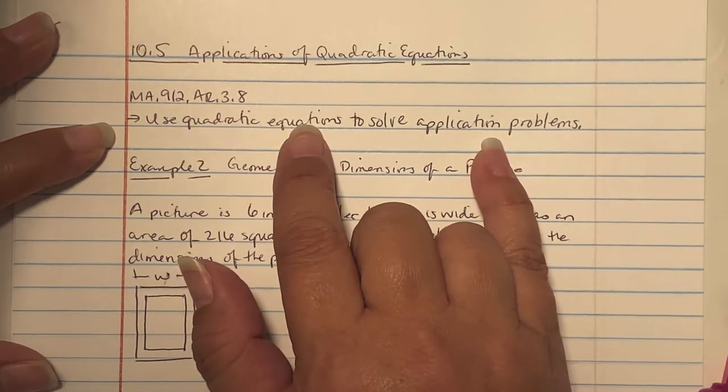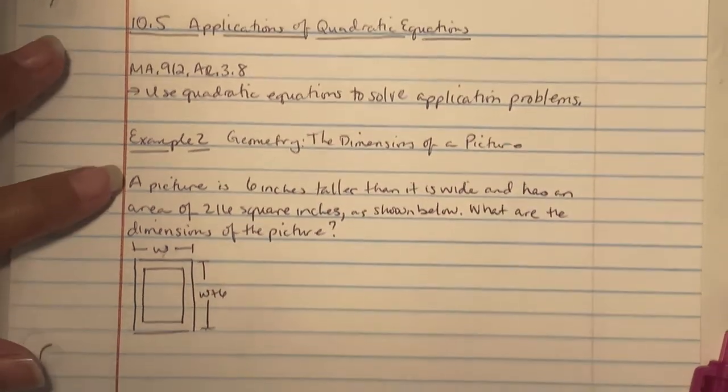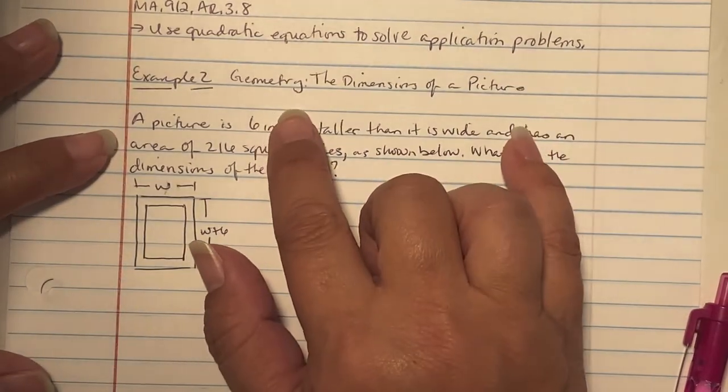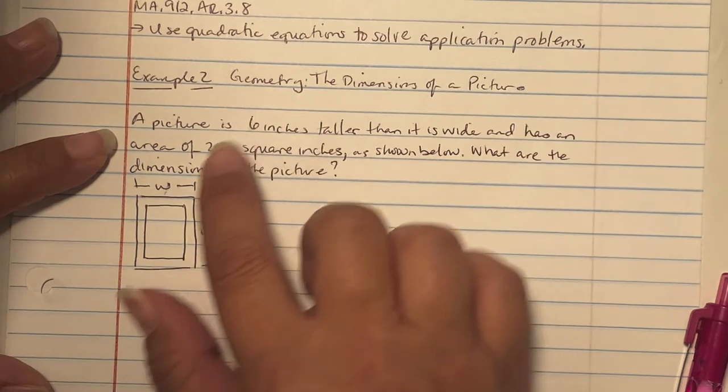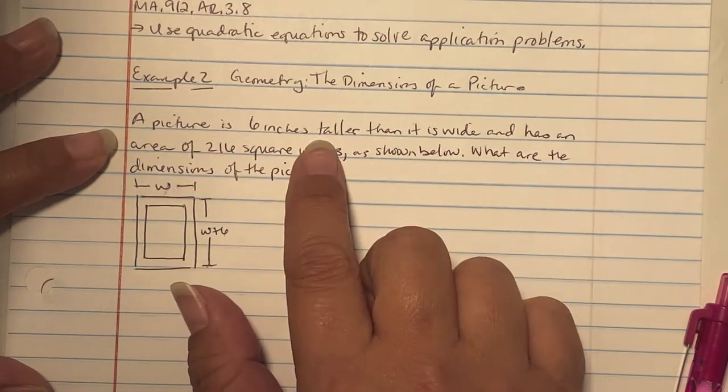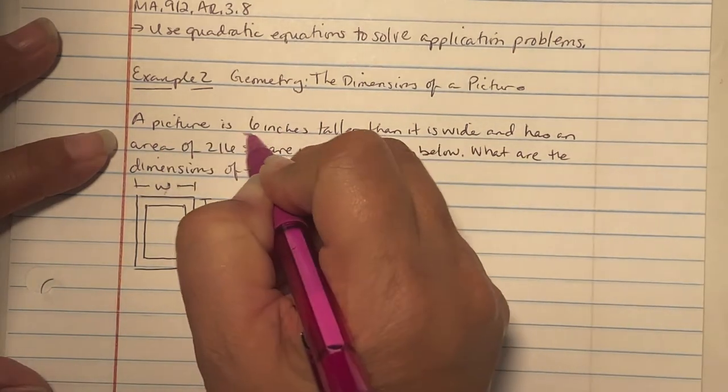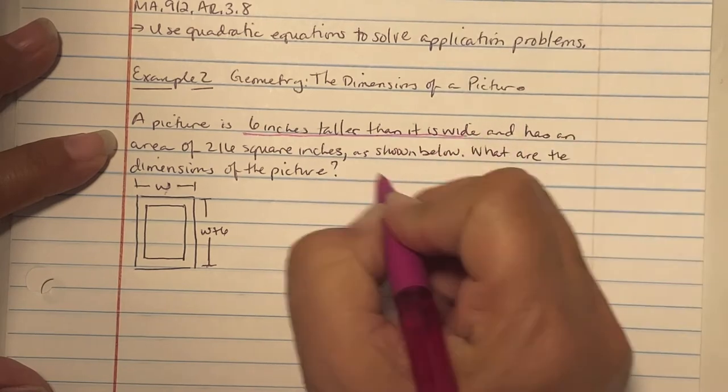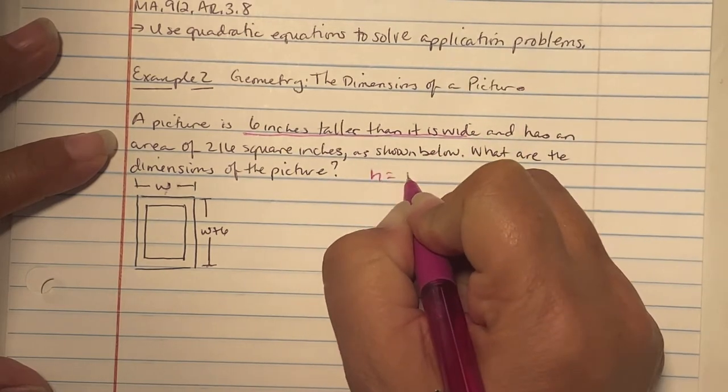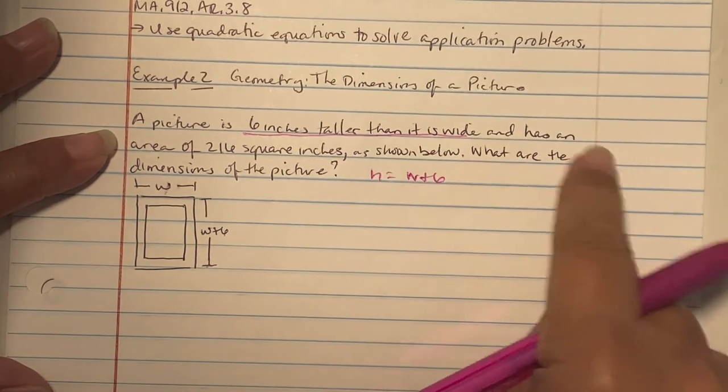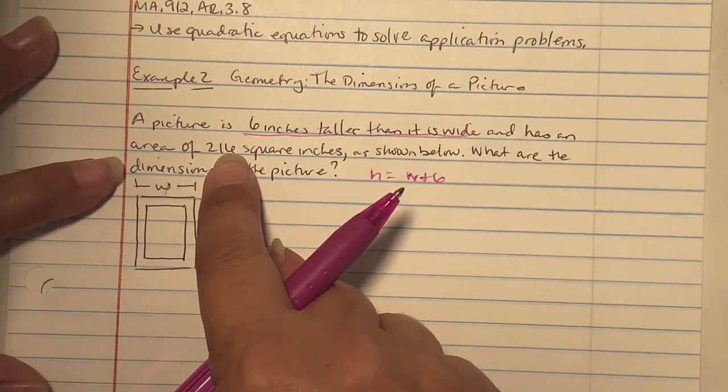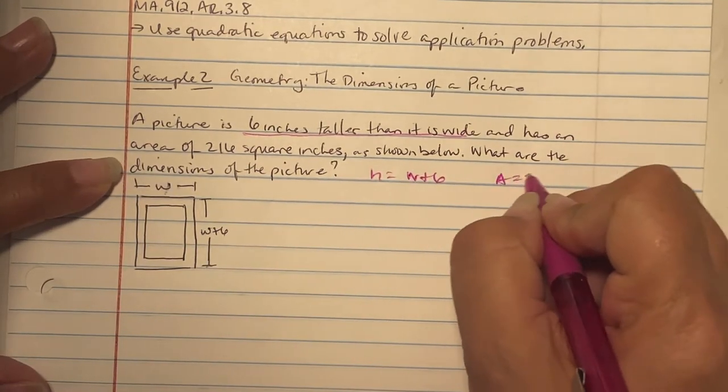Example 2 starts with a geometry problem, the dimensions of a picture. A picture is six inches taller than it is wide, so the height is width plus six, and has an area of 216 square inches. The area is 216, as shown below. What are the dimensions of the picture?